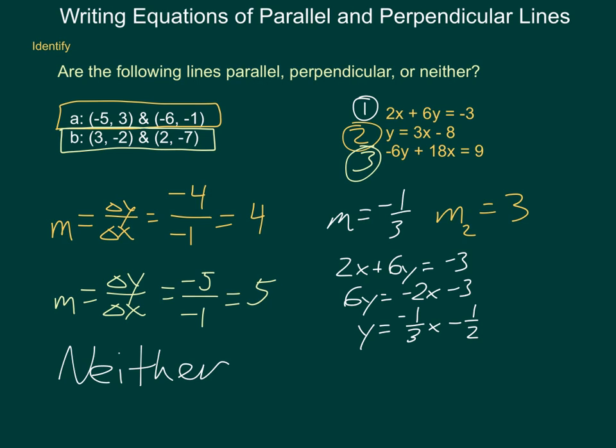Doing number 3, I have negative 6Y plus 18X equals 9. If I go through and solve this, I would have negative 6Y equals a negative 18X plus 9. Divided by negative 6, Y equals 3X minus 3/2. So my slope for number 3 is a positive 3.